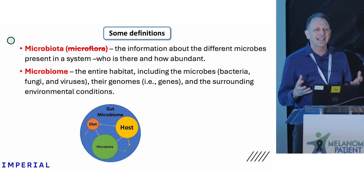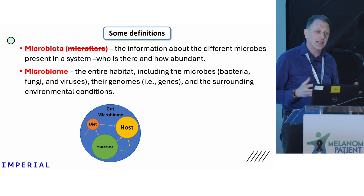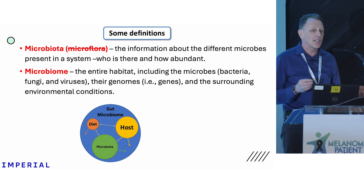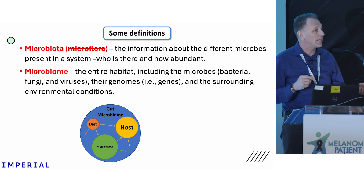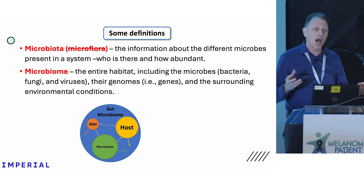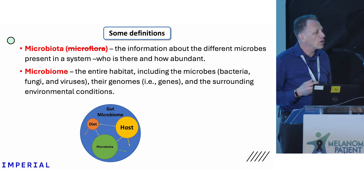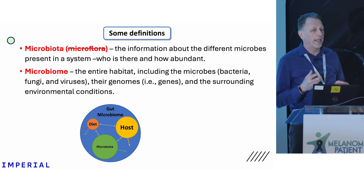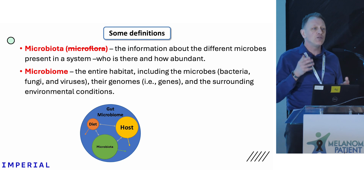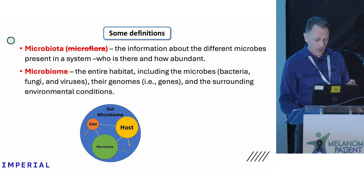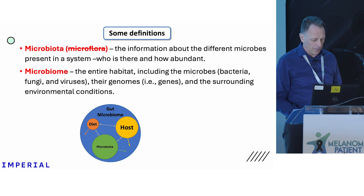That's everything that lives in and on us — the viruses, the fungi, the small parasites. Apparently everybody in the world has about one to two parasites that live in their gut, but they're benign. But the majority of the organisms, by weight, are bacteria. And that's what we're really interested in: knowing who's there and how abundant they are, because they change over time.